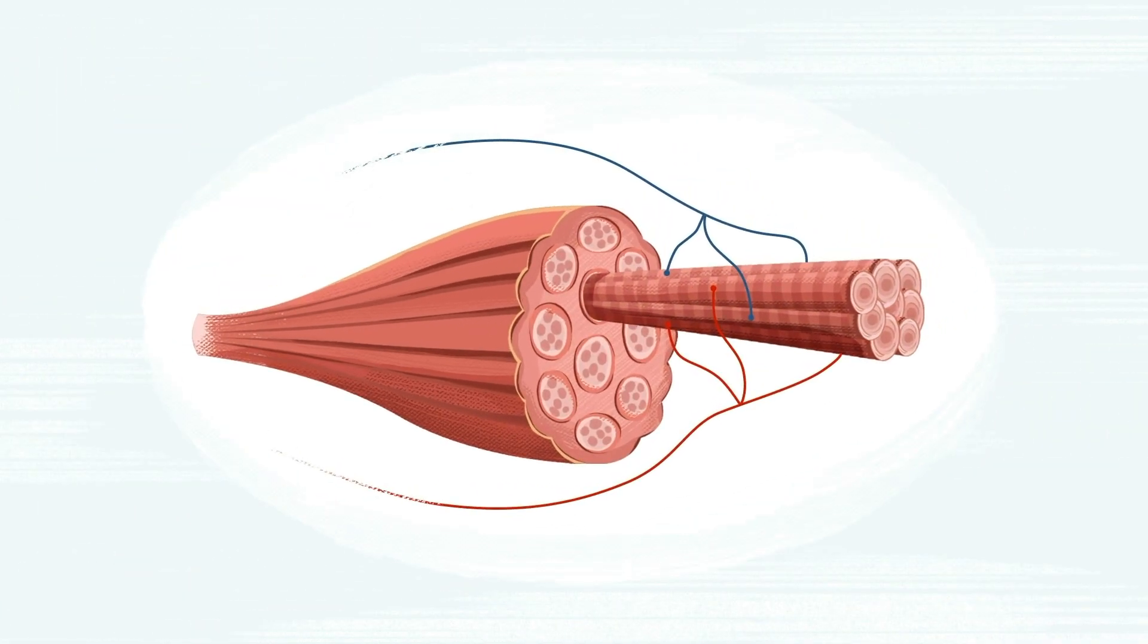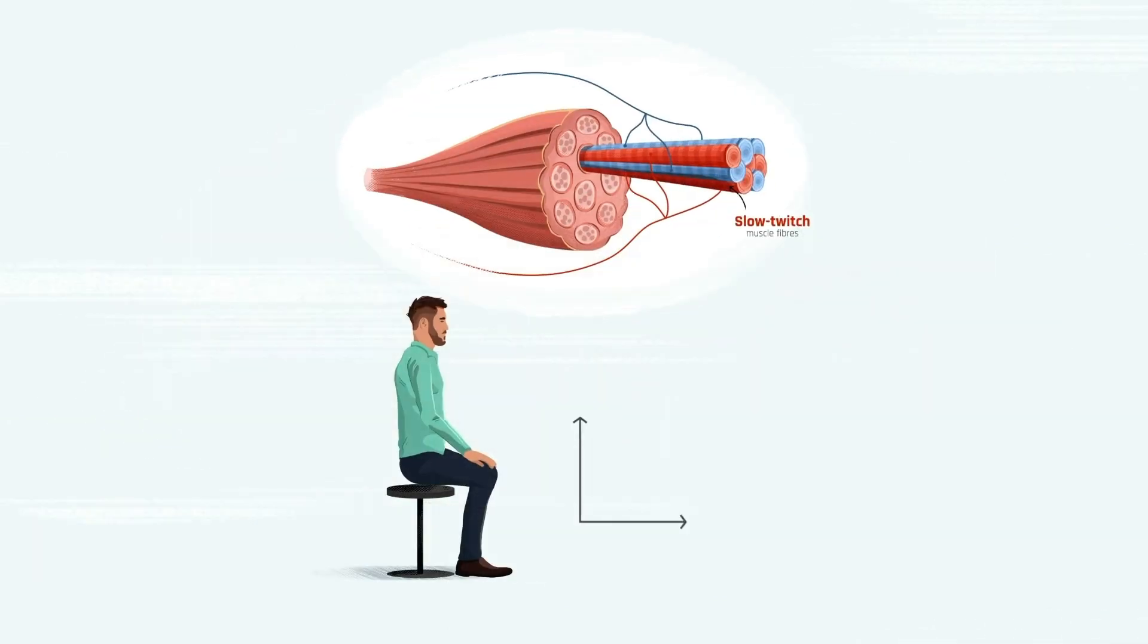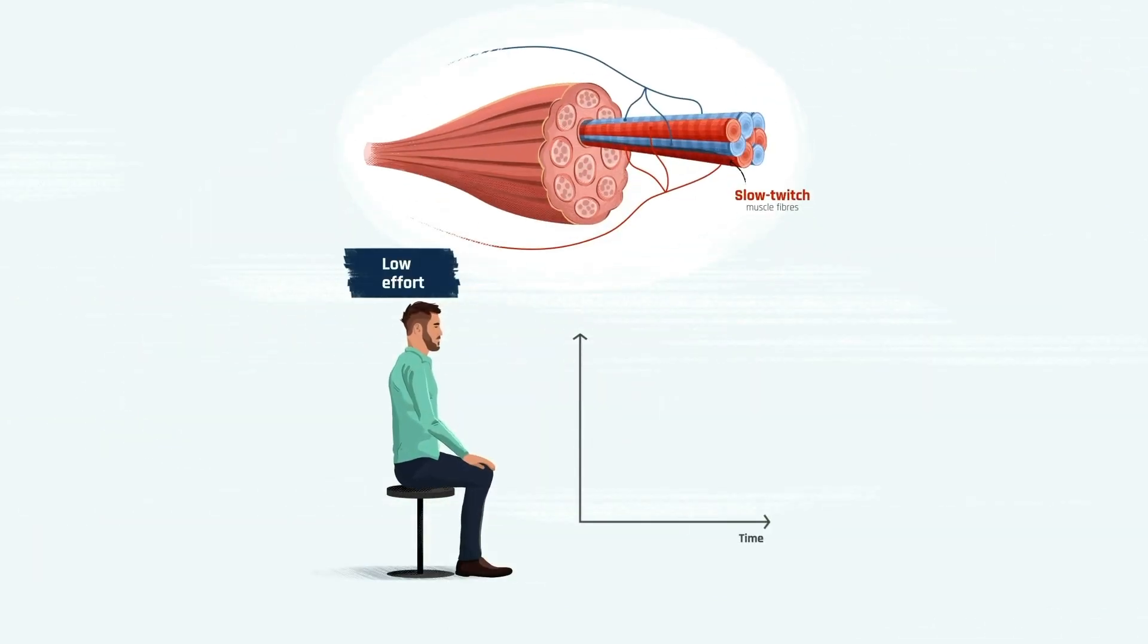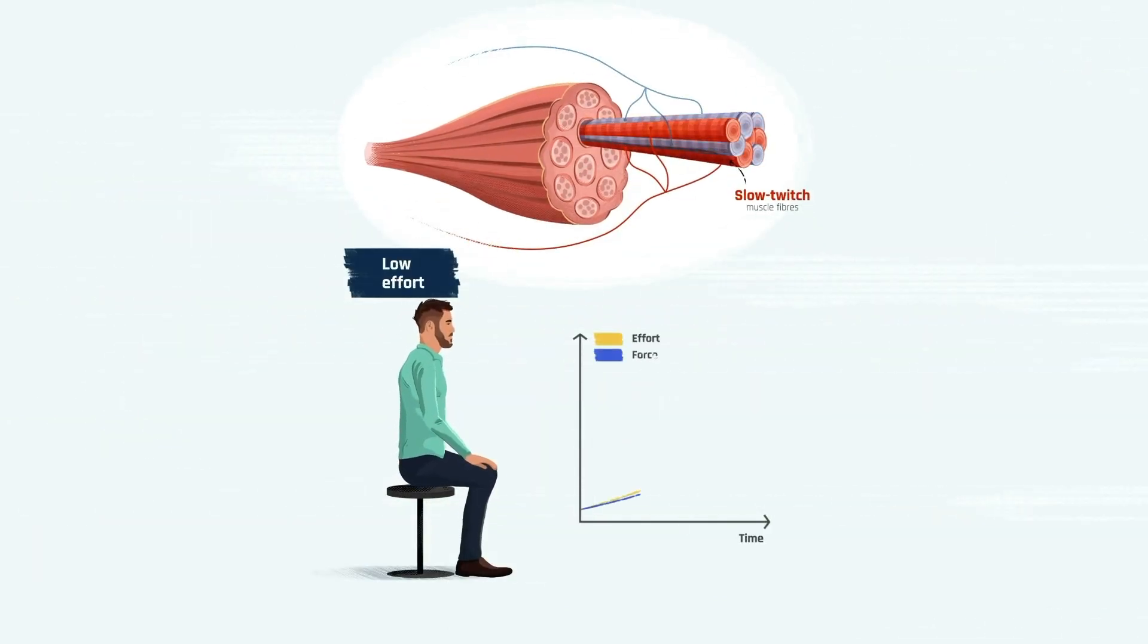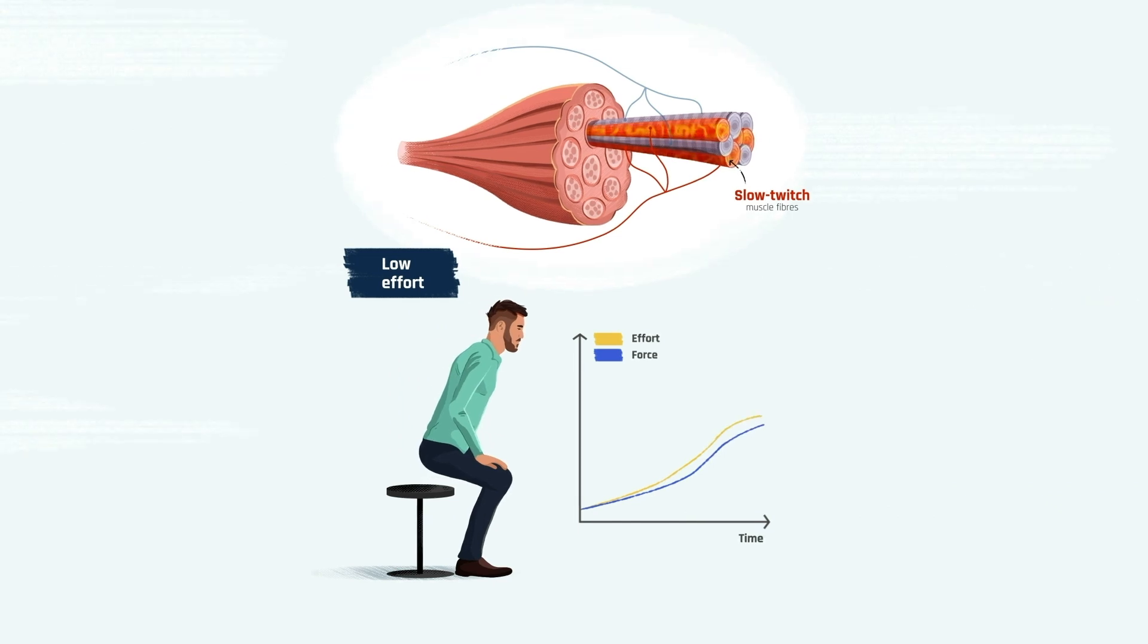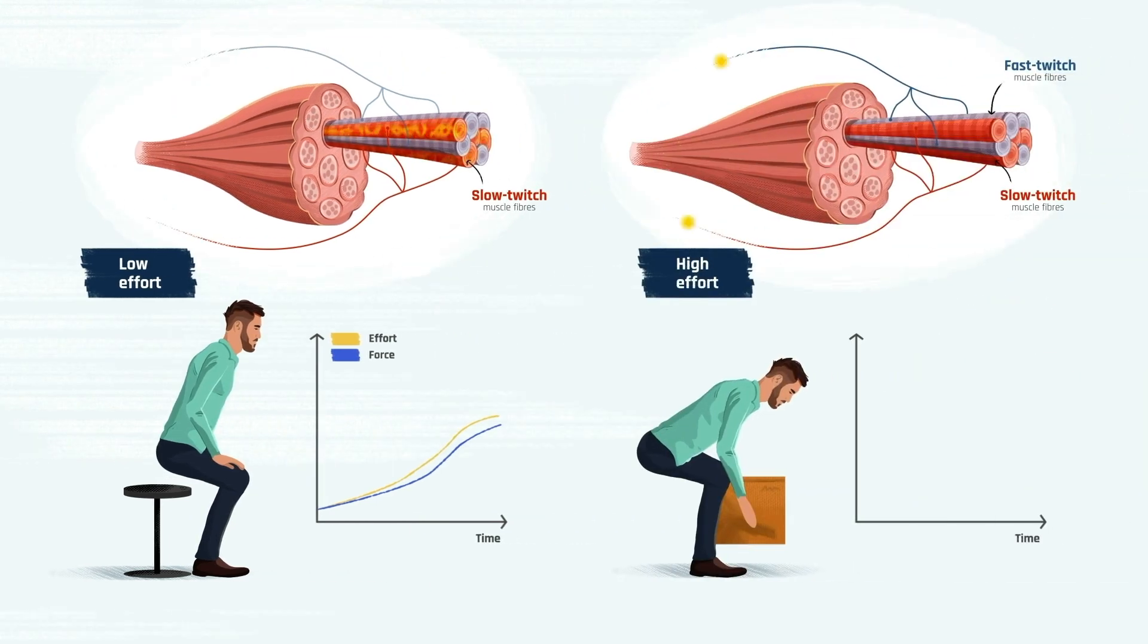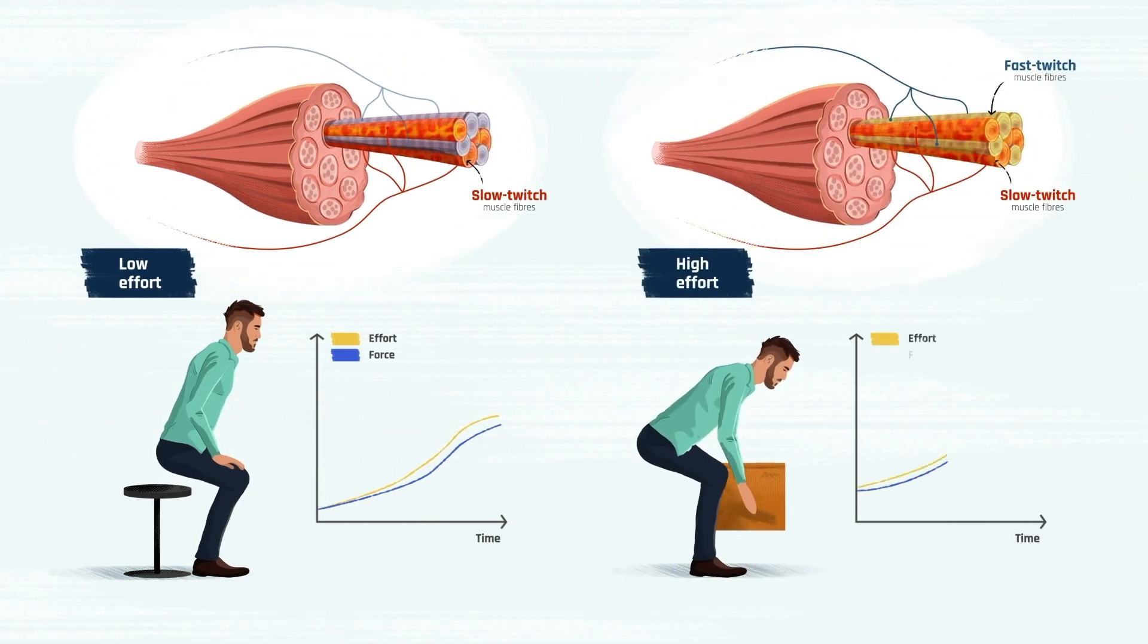There are two types of muscle fibers: slow and fast twitch. With a low effort, such as getting up from the chair, only slow twitch fibers get activated. When the effort increases, more motor neurons get mobilized, activating also fast twitch fibers and producing a stronger contraction.